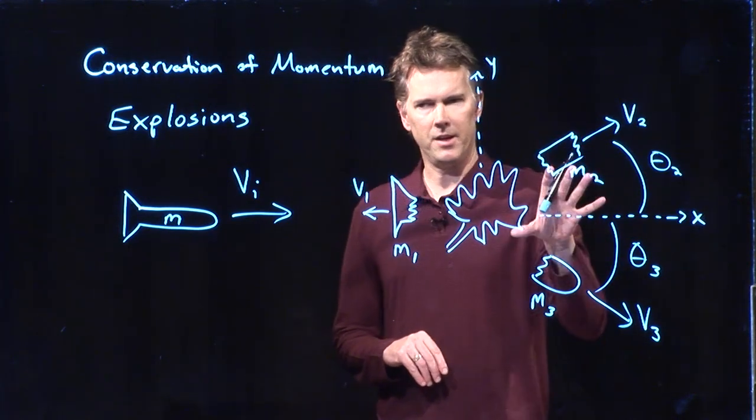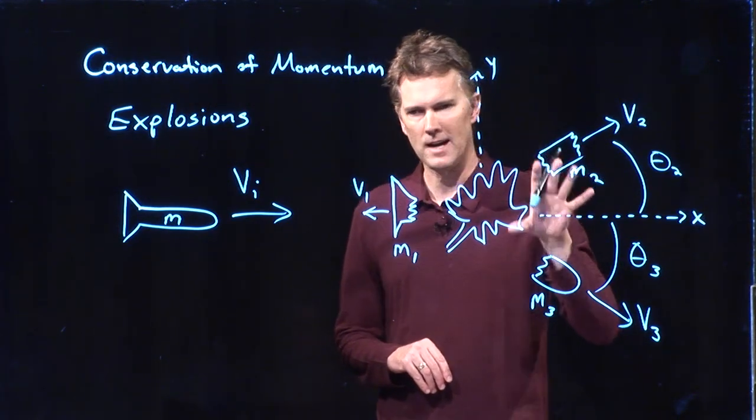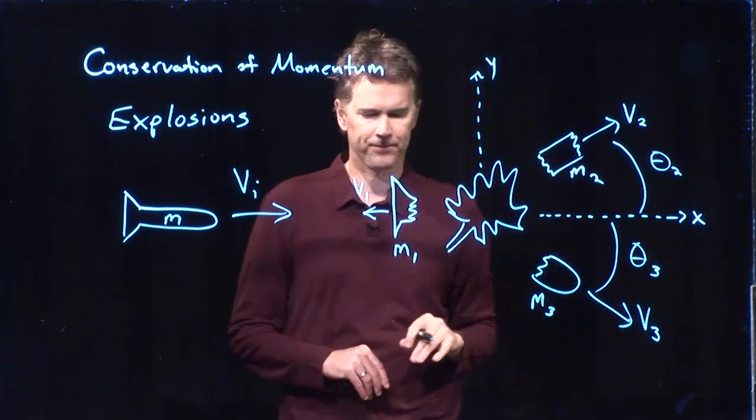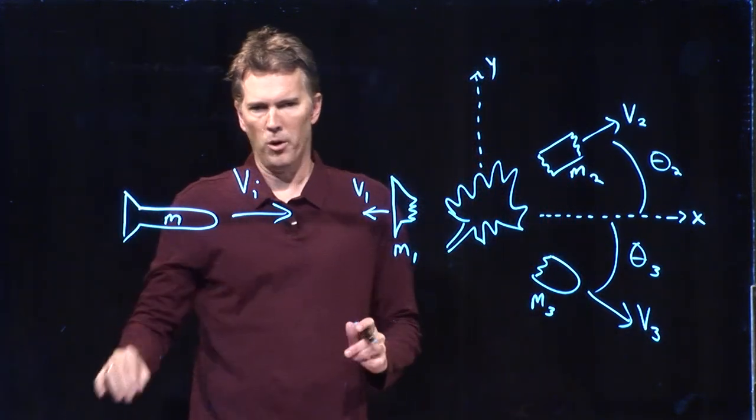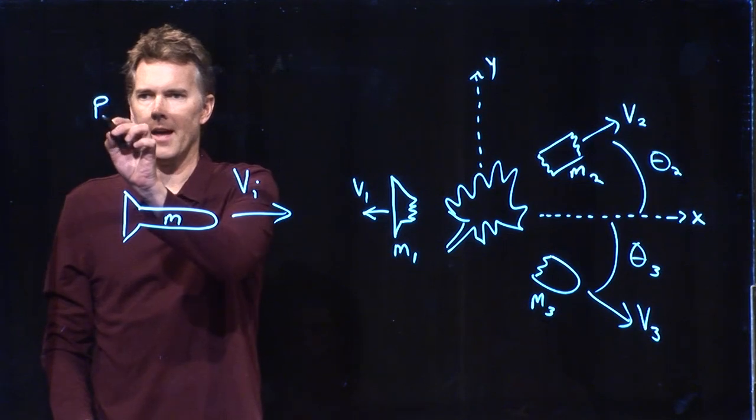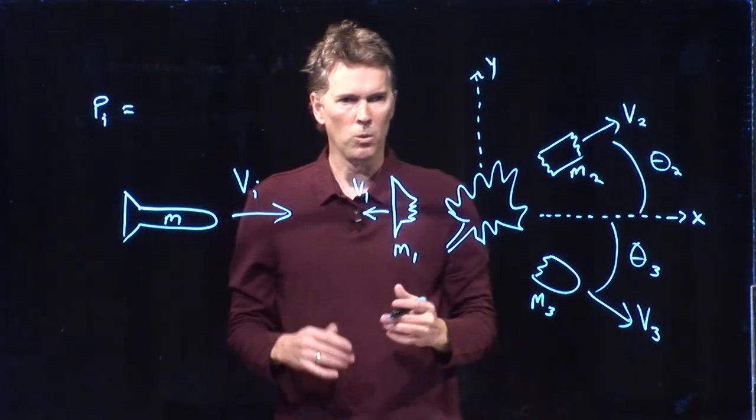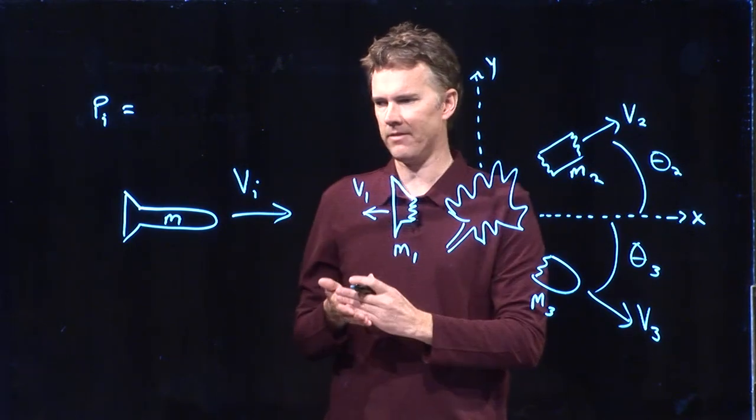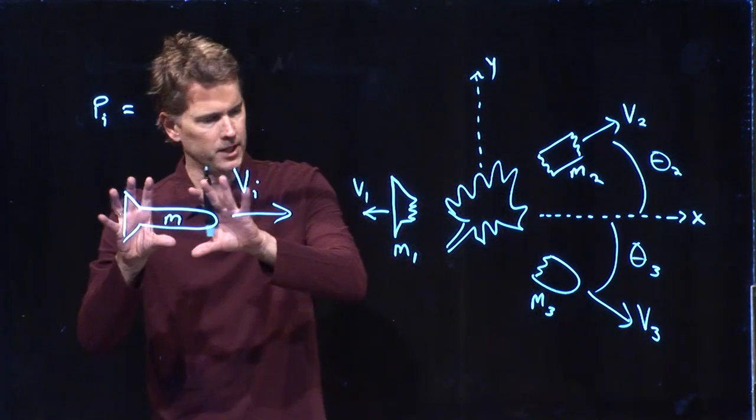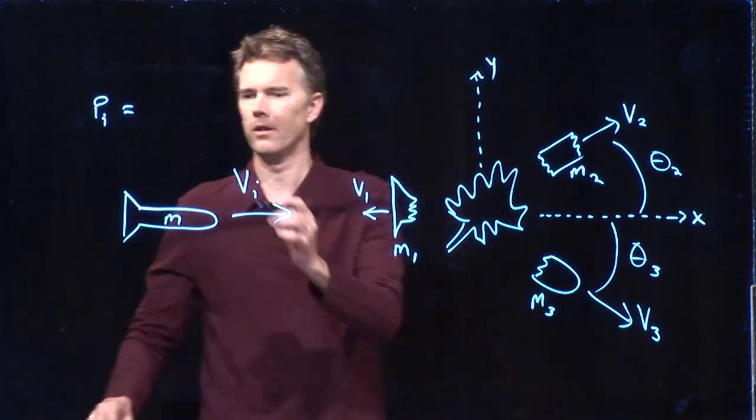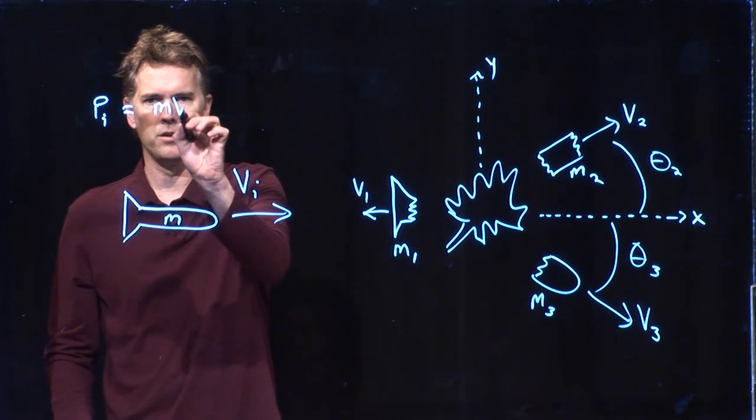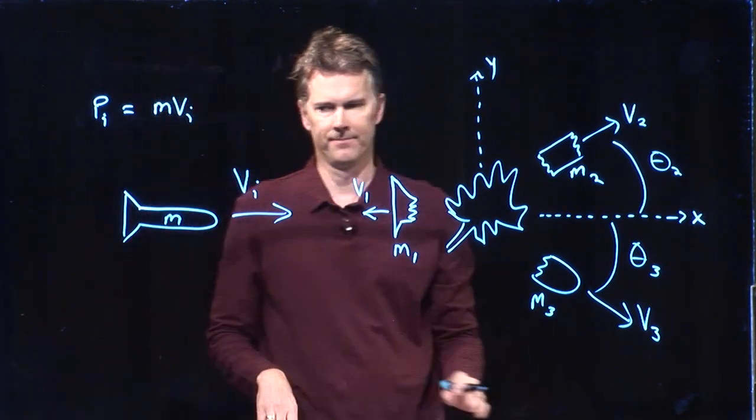Let's now analyze this from the point of view of conservation of momentum. So in our before picture here, what can I say about the initial momentum of the system? Well, we know that momentum is just mass times velocity. Everything is heading in the positive x direction. So this is just m times vi.